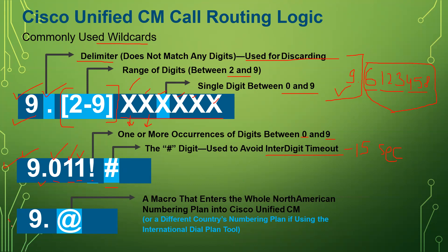Then we have the pattern 9.@ — what it means is it's a macro that represents the whole North American Numbering Plan, and different countries' numbering plans as well. The nine and dot work the same way, and @ means any number.